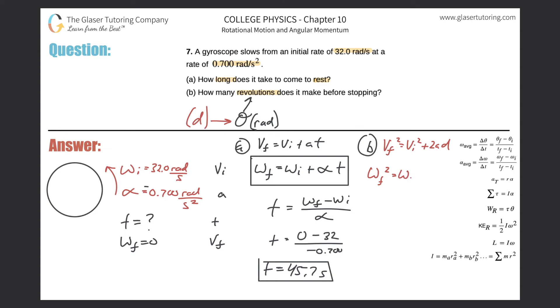We want to find theta, so just solve this bad boy for theta. So theta is going to be equal to final angular velocity squared minus the initial squared all divided by two times your alpha. Plug in the values now. So this is basically the equation. Plug in your values now.